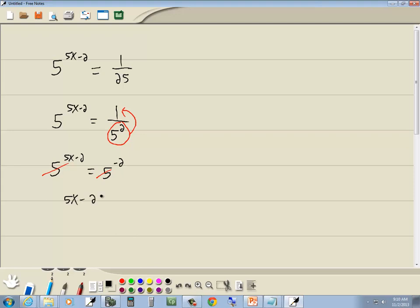So we've got 5x minus 2 is equal to negative 2. Now this is a linear equation. First step, get rid of parentheses, don't have any. Second step, get rid of fractions, don't have any. Third step, get everything with an x on one side and numbers on the other.